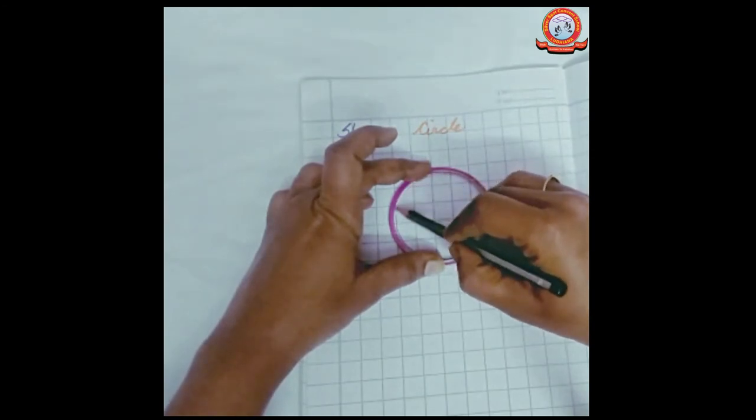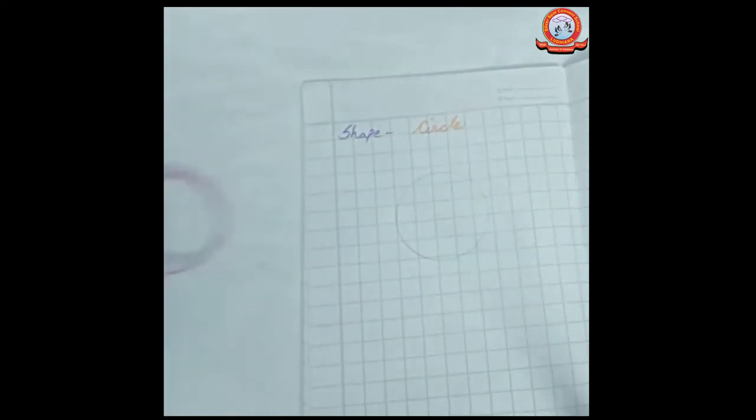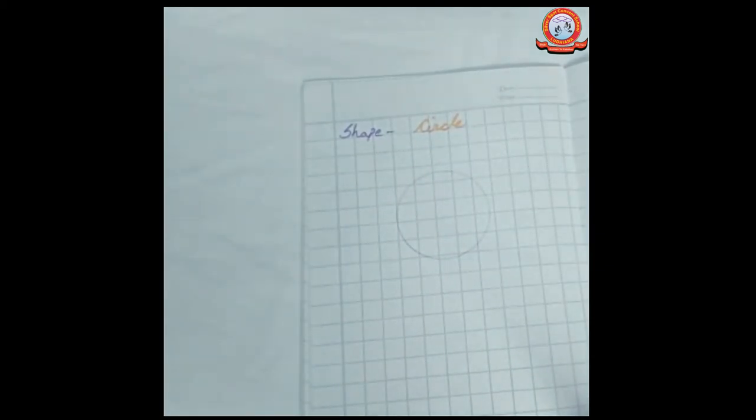Now you are big babies. You need to get everything. Okay? How to draw the shape of a circle? Like this. See? How to draw the shape of a circle? Like this. How easy it is.